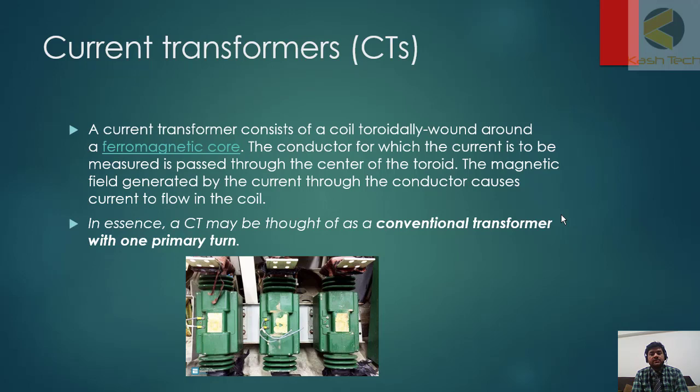A current transformer consists of a coil toroidally wound around a ferromagnetic core. The conductor for which the current is to be measured is passed through the center of the toroid. The magnetic field generated by the current through the conductor causes current to flow in the coil.